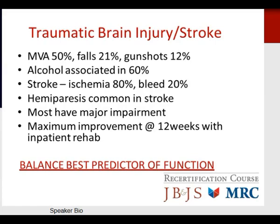Regarding traumatic brain injury and stroke: 50% of TBI injuries occur as a result of motor vehicle accidents, 21% secondary to falls, and 12% due to gunshots; alcohol is associated in 60% of cases. Stroke is ischemic in nature or hemorrhagic in 20% of cases. Hemiparesis is common in stroke and most individuals have a major impairment. Maximum improvement is expected at 12 weeks with inpatient rehab, and an important predictor of function is balance.